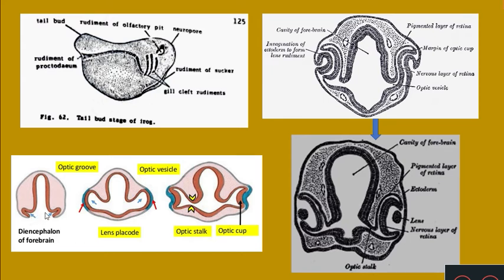The wall of the diencephalon gives rise to parts of the eye like retina and part of the cornea. The epidermal ectoderm gives rise to the lens. The mesenchyme tissue gives rise to the sclera, choroid, and also part of the cornea. So the tissues of the eye develop from three sources: the wall of the diencephalon gives rise to the retina as well as part of the cornea; the epidermal ectoderm gives rise to the lens; and the mesenchyme of the head gives rise to the sclera, choroid, and part of cornea.